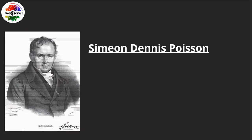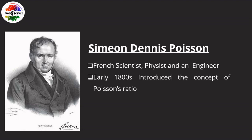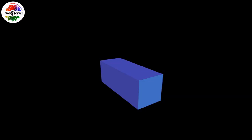In the 19th century, the French scientist Simon Denis Poisson developed the concept of Poisson's ratio by conducting experiments on different materials. For better understanding, let's consider a bar of length L with a square cross-section and sides B. We are going to apply a force normal to the cross-sectional area, which is tensile in nature.